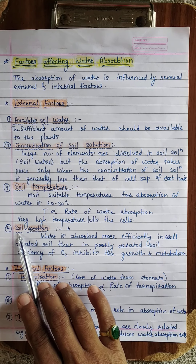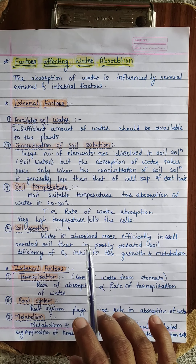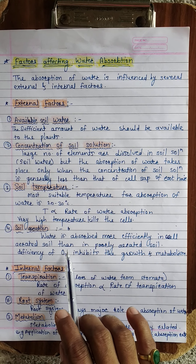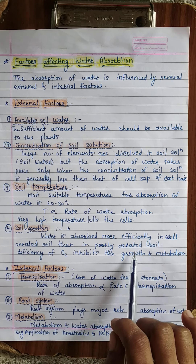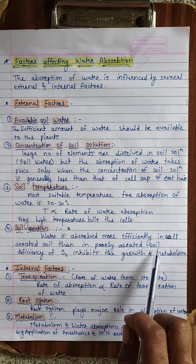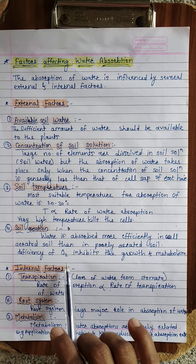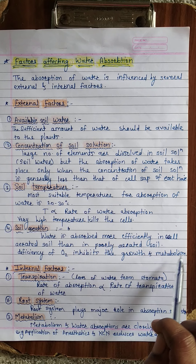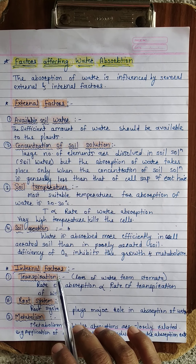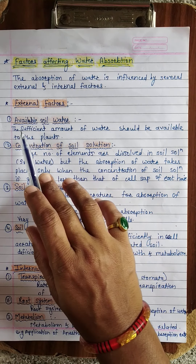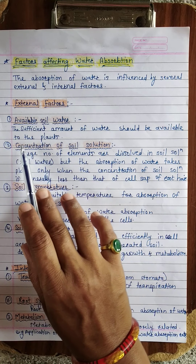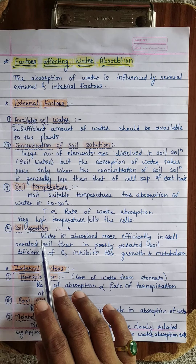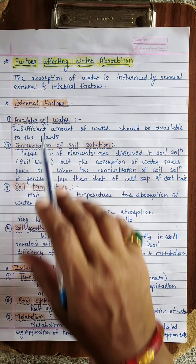The fourth external factor is soil aeration. Water is absorbed more efficiently in well-aerated soil than in poorly aerated soil, as deficiency of O₂ inhibits the growth and metabolism of the plant. So, available soil water, concentration of soil solution, soil temperature, and soil aeration are the external factors.